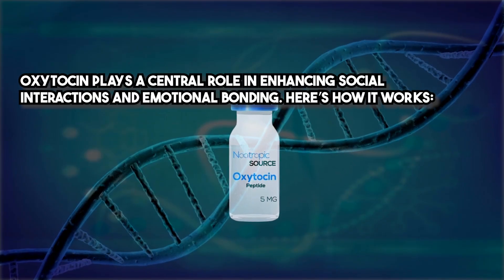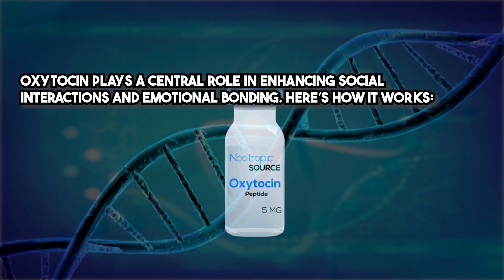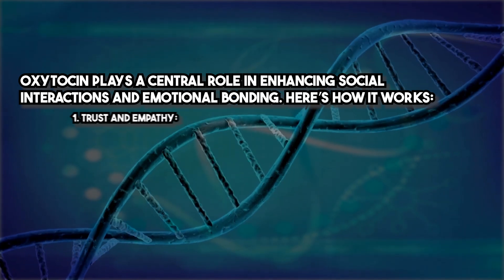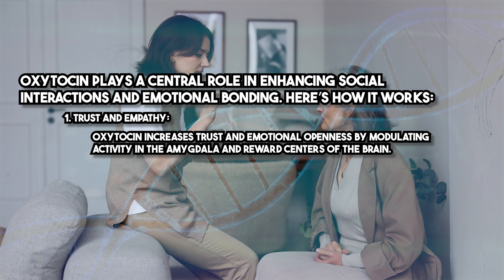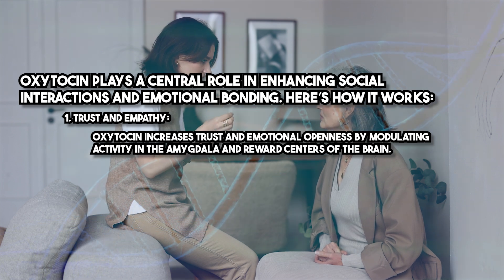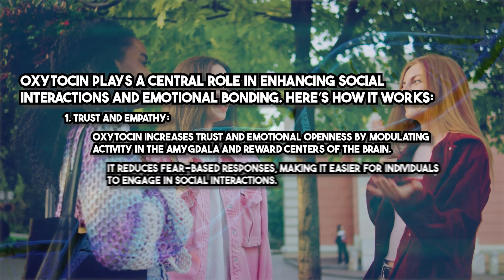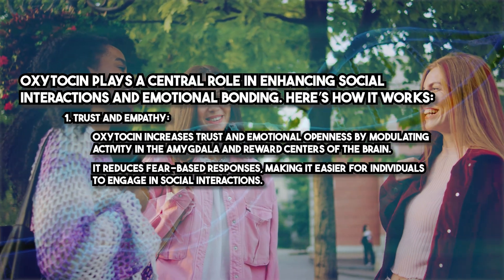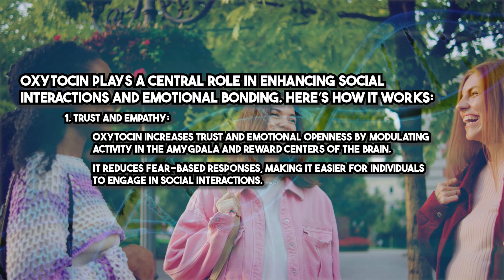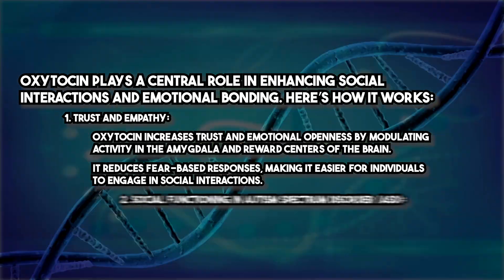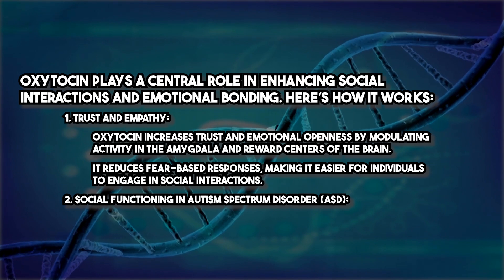Oxytocin plays a central role in enhancing social interactions and emotional bonding. Regarding trust and empathy, oxytocin increases trust and emotional openness by modulating activity in the amygdala and reward centers of the brain. It reduces fear-based responses, making it easier for individuals to engage in social interactions. For social functioning and autism spectrum disorder (ASD), studies have shown that intranasal oxytocin improves eye contact.